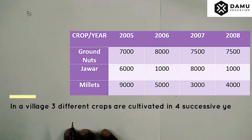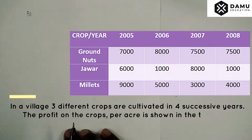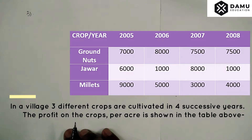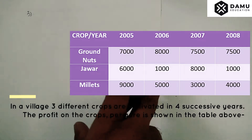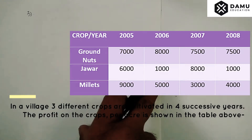In this question, what they are given is: in a village, three different crops are cultivated in four consecutive years. The profit in rupees on the crops per acre is shown in the given table. Based on that, you have to first calculate the mean profit.